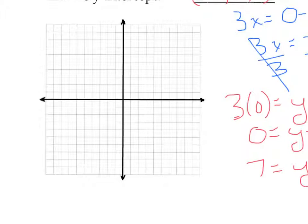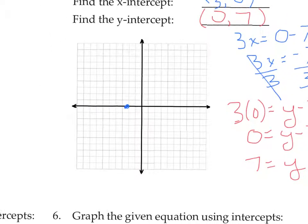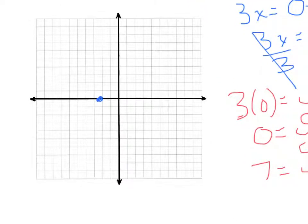So negative 7 thirds, or negative 2 and 1 third, with y equal to 0 — where is that on the graph? Negative 1, negative 2, negative 2 and 1 third is right about here. The y-intercept is (0, 7), so we count up to 7 — right up here. Connect the dots.